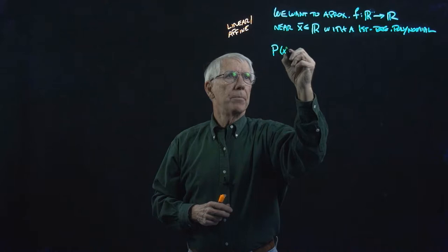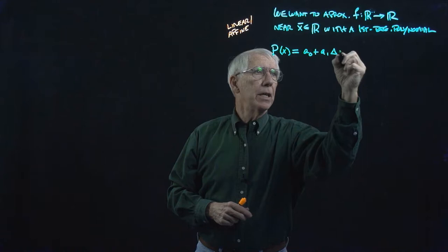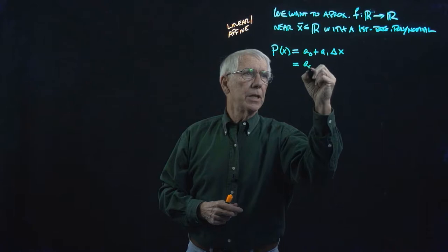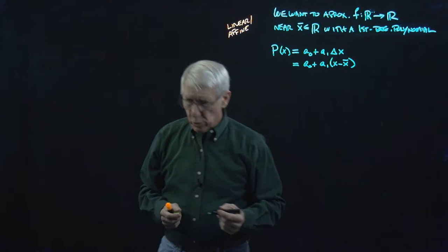So this is p of x, and we said that we want to do this with a linear or affine function. So this is going to be a₀ plus a₁ times Δx, where Δx is x minus x̄. So we're doing this near an x̄. Let's draw a quick picture of what's going on.